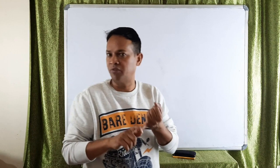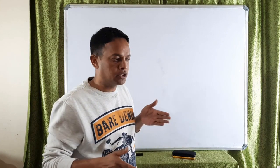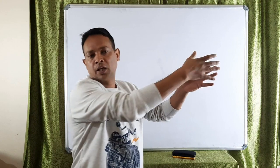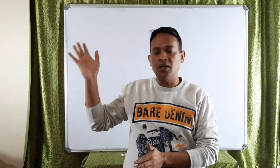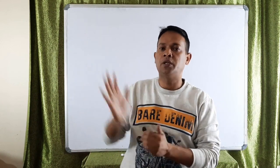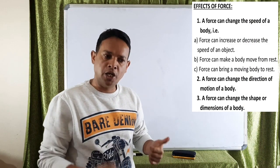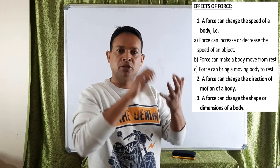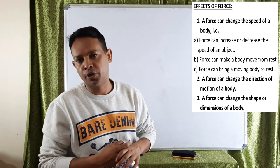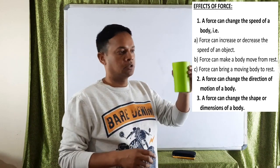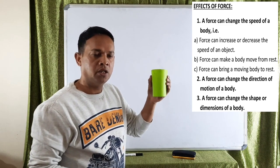The second effect is that force can change the direction of motion of a body. For example, a football kicked in one direction can be kicked by another player in a different direction. The third effect is that force can change the shape or dimensions — meaning length, breadth, and height — of a body. For instance, pressing a cylindrical object can deform and change its shape.